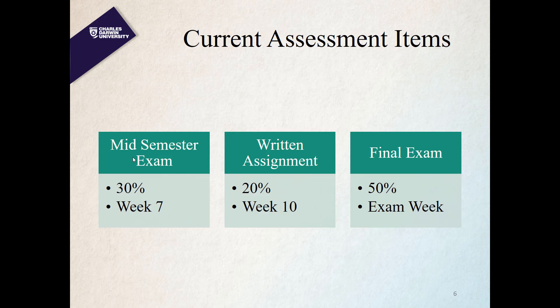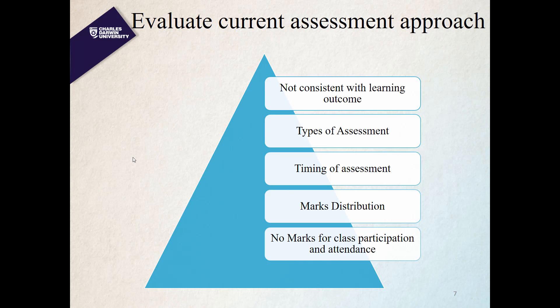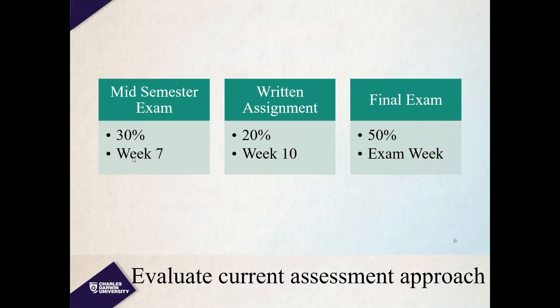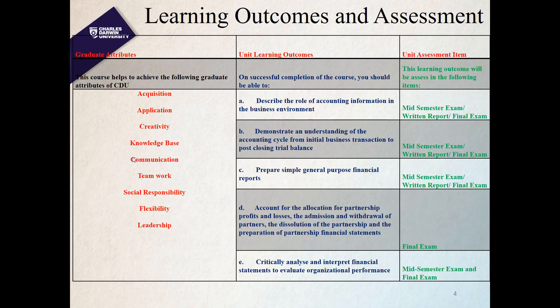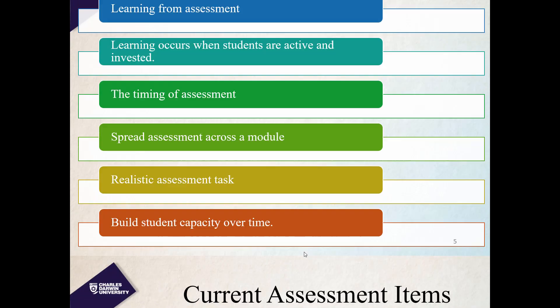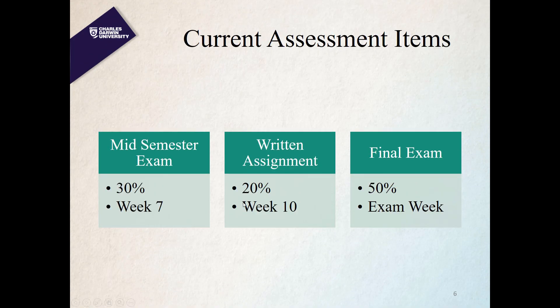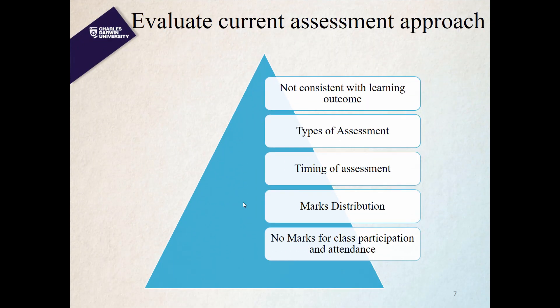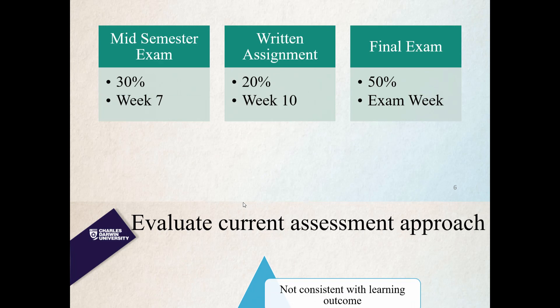There are several problems with the current assessment framework. First, it is not consistent with learning outcomes — for example, one learning outcome requires students to critically analyze and interpret financial statements, but none of the current assessment items assess this. The written assignment involves basic journal entry recording and transaction recording, with no opportunity for students to analyze anything. The current framework lacks consistency between learning outcomes and assessment items.